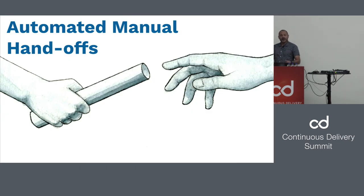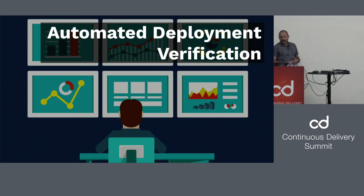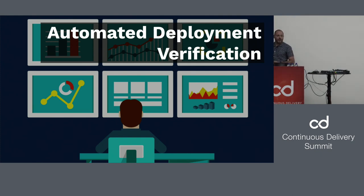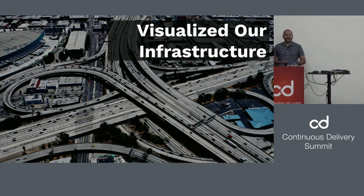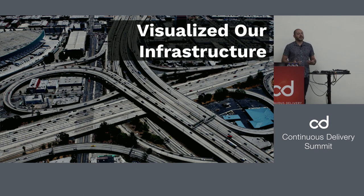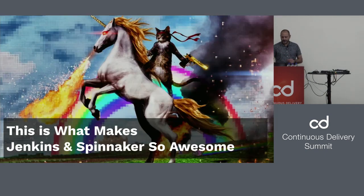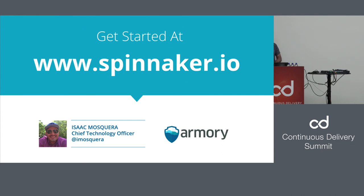So what did we do in the last 20 minutes? We automated that manual handoff between human beings that came out of spreadsheets and meetings. We automated deployment verification so we don't have to sit behind metrics dashboards and guess what is good or bad. We added deployment windows for safety so we know not to deploy on Friday at 3 PM and can enjoy our weekends. We visualized infrastructure — whether Kubernetes, AWS, or GCP — across multiple accounts and regions for our application. As developers, we only care about our applications, not the world of infrastructure. This is what makes Jenkins and Spinnaker so awesome. Go to Spinnaker.io to get started. Thank you.